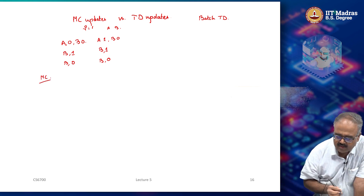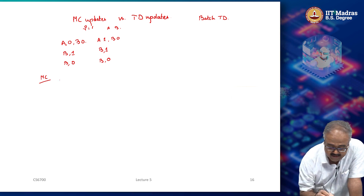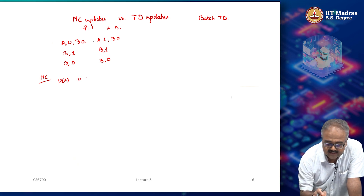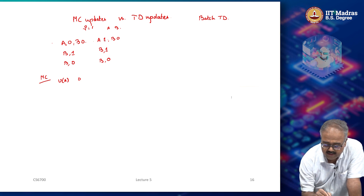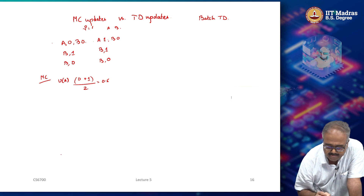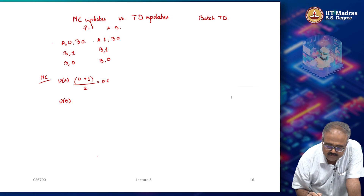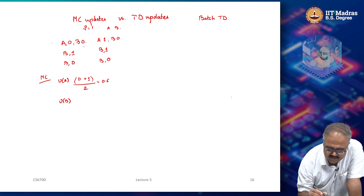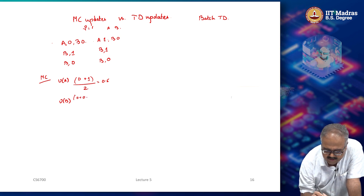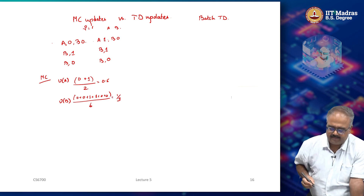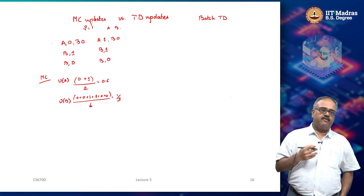Let us see what happens with Monte Carlo updates. We look at trajectories where a particular state has occurred. Computing V(A): A occurs in two trajectories — in the first case the return was 0, in the second case the return is 1. So we add these two and divide by 2, giving value of A equals 0.5. For value of B: B has occurred in all 6 trajectories. The sum of returns is 0 + 0 + 1 + 1 + 0 + 0 = 2, divided by 6, which is 1/3. So value of B is 1/3 and value of A is 0.5 by Monte Carlo.